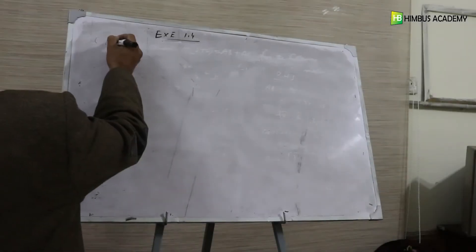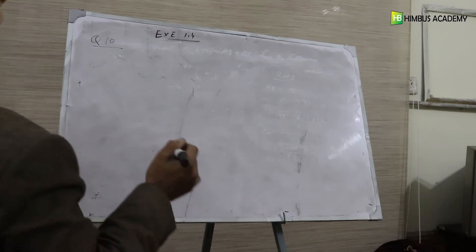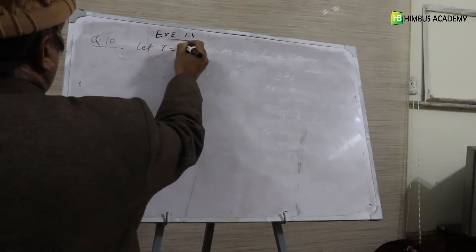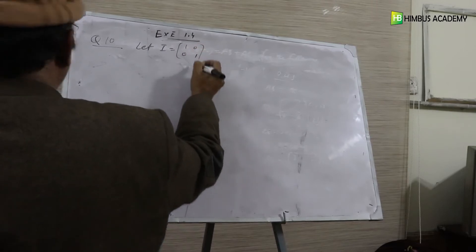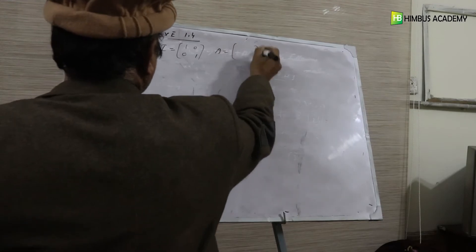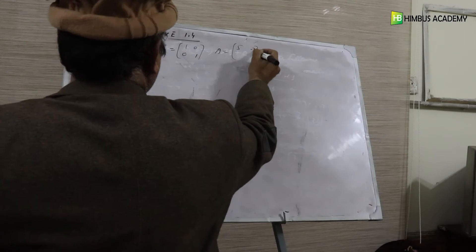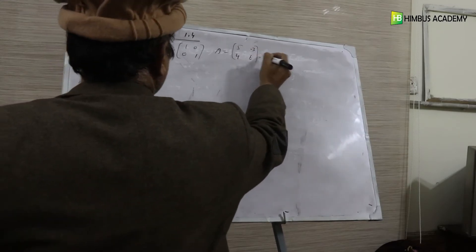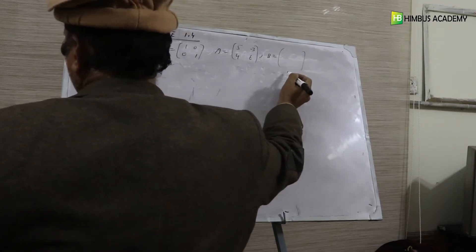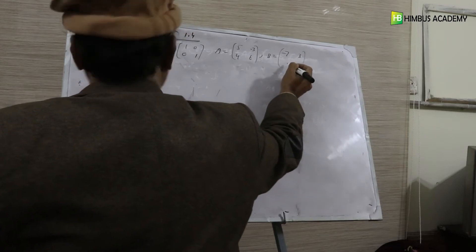1.4 question 10. Let I is equal to 1 0 0 1, A is equal to 5 minus 3, 4 6, B is equal to minus 7, 3, 2, 8.